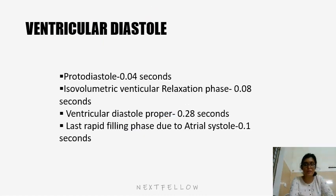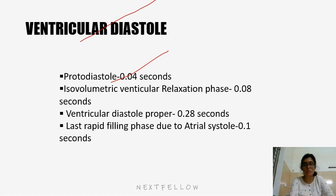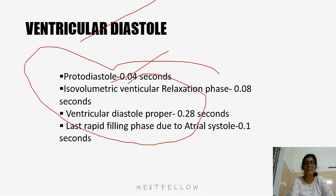Coming to ventricular diastole, the ventricle starts relaxing. Protodiastole is 0.02 seconds. There was isovolumetric contraction earlier; now there is isovolumetric relaxation, which is 0.08 seconds. These durations are important to remember.